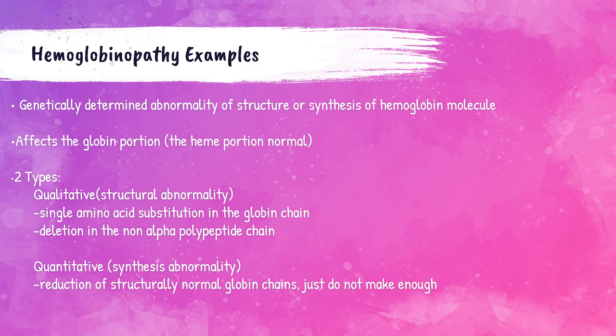There are two different types of hemoglobinopathies: qualitative and quantitative. A qualitative hemoglobinopathy is where there is a structural abnormality of the globin chain, and this is caused by a single amino acid substitution in that globin chain. A quantitative hemoglobinopathy is where there is a synthesis or production abnormality of hemoglobin, caused by a reduction of structurally normal globin chains — there just aren't enough globin chains being produced.